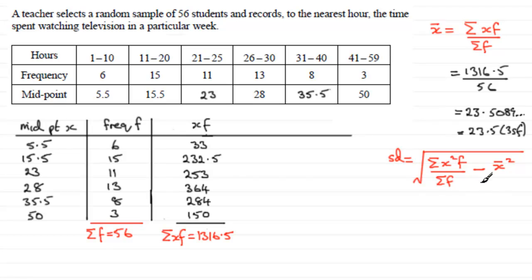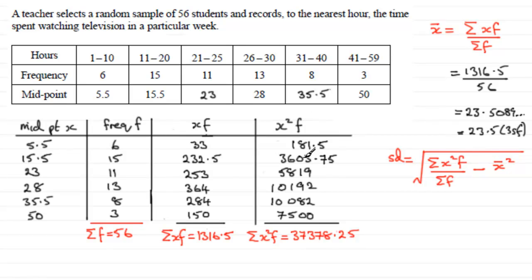So with this formula, you can see that what we don't have is sigma x squared f. So we need to square these values and multiply them by the frequency, and then add them all up. Well, I've done this for you, and here we have it here. So you can check it out.